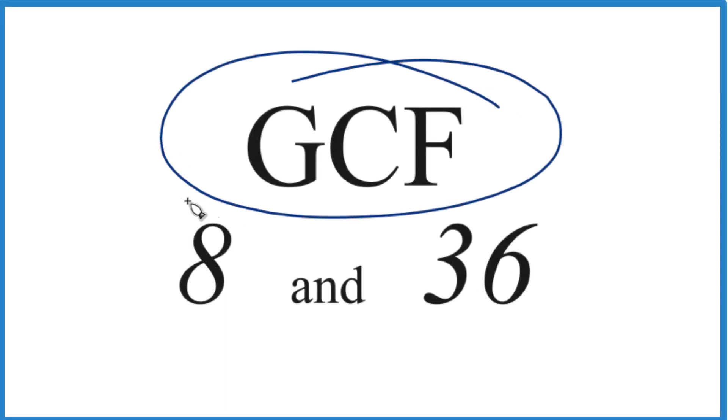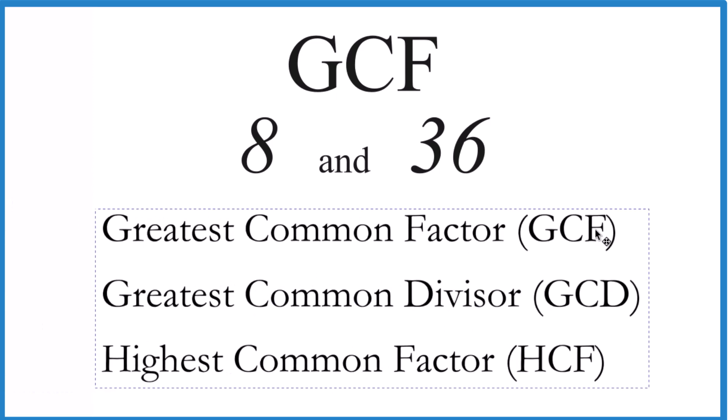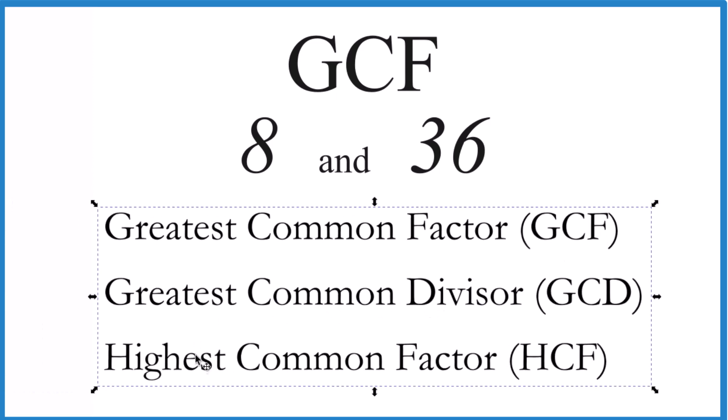Let's find the greatest common factor for 8 and 36, and here's how we do it. The greatest common factor, or GCF, is also called the greatest common divisor and sometimes the highest common factor. These are all the same things. I like greatest common factor.